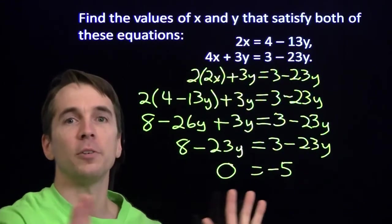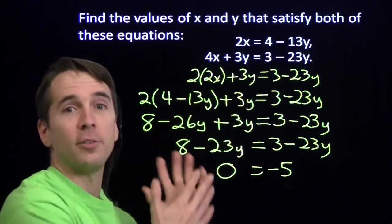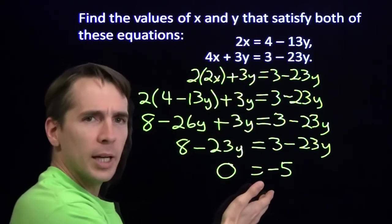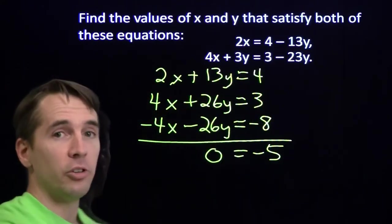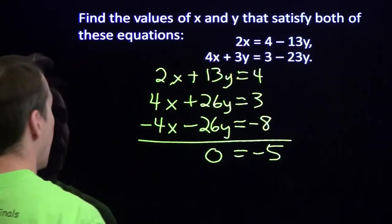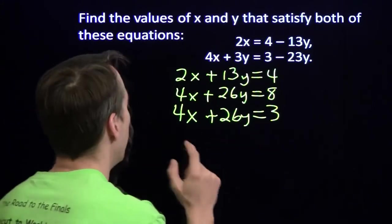You know, this clever substitution was perfectly valid. This is a great, clever way to go after problems. We got to this 0 equals minus 5 thing here, just like we did here. This elimination, perfectly valid.